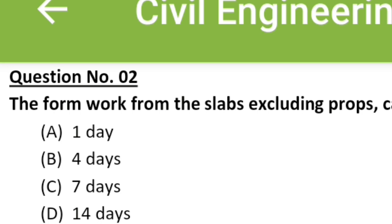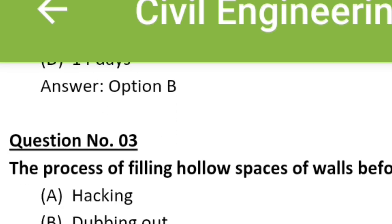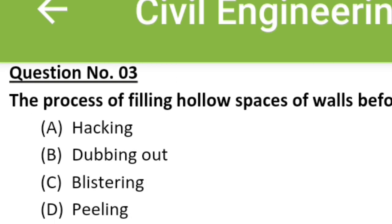The formwork from the slabs excluding props can be removed only after: Option A: 1 day, Option B: 4 days, Option C: 7 days, Option D: 14 days. The correct answer is Option B: 4 days. The process of filling hollow spaces of walls before plastering is known as: Option A: hacking, Option B: dubbing out, Option C: blistering, Option D: peeling. The correct answer is Option B: dubbing out.